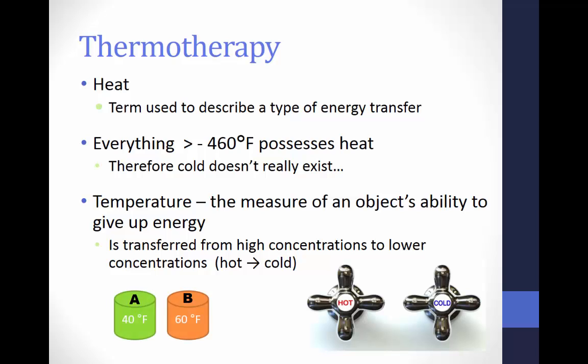On this slide, there are two cylinders with differing temperatures: 60 degrees Fahrenheit and 40 degrees Fahrenheit. According to the transfer of heat, energy will flow from the area of high temperature, the 60-degree cylinder, to the 40-degree cylinder. If we had a third cylinder at 80 degrees Fahrenheit, we would see the same type of energy transfer — energy flows from the 80-degree Fahrenheit cylinder to the 60-degree Fahrenheit cylinder.